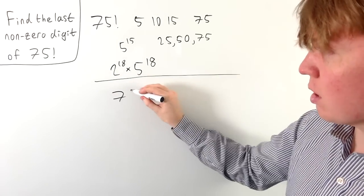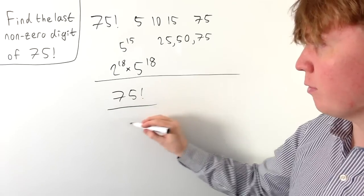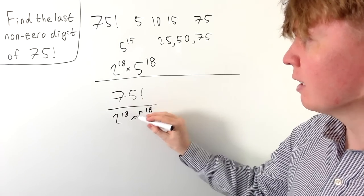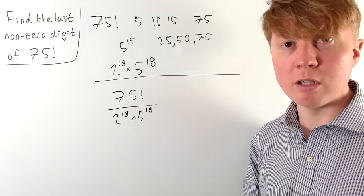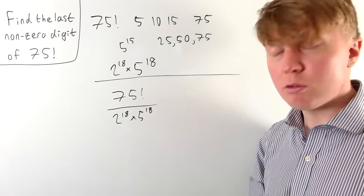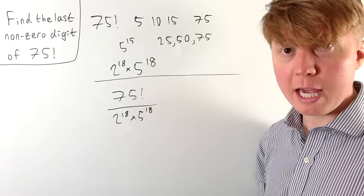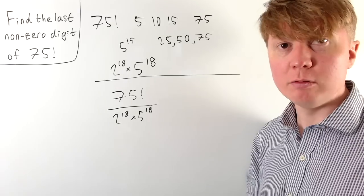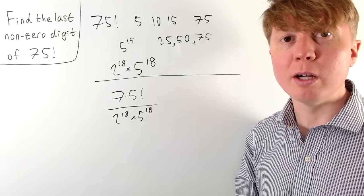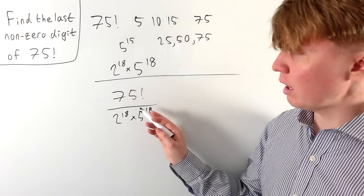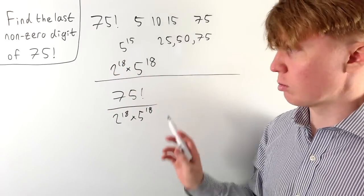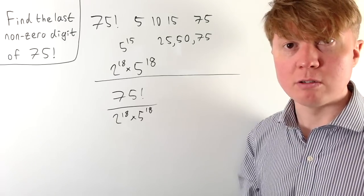The idea from here is to take 75 factorial and divide by 2^18 × 5^18 — that is, divide by 10^18 — to get rid of all the zeros at the end. We then consider the last digit of this result, which is the last non-zero digit of 75 factorial. It will be helpful to consider this number modulo 5, which still gives us useful information about the last digit.